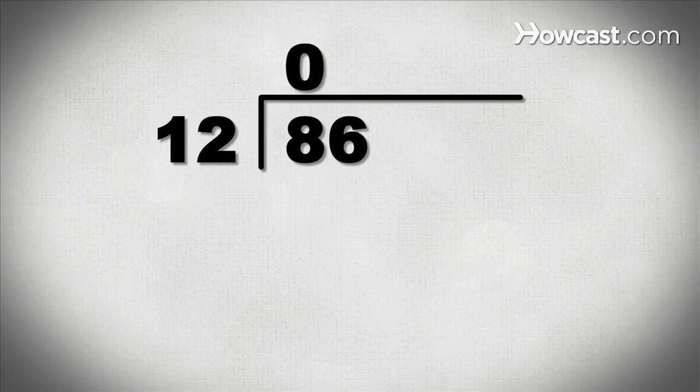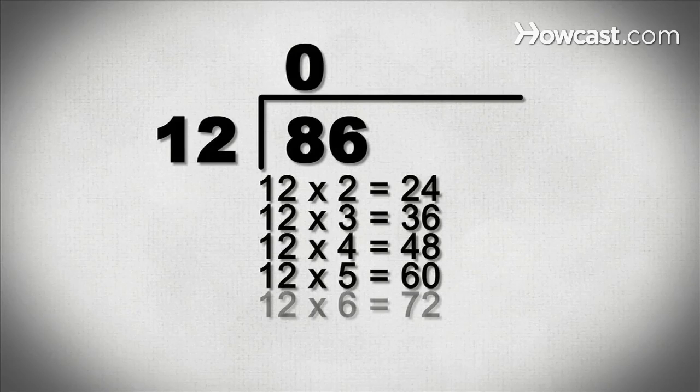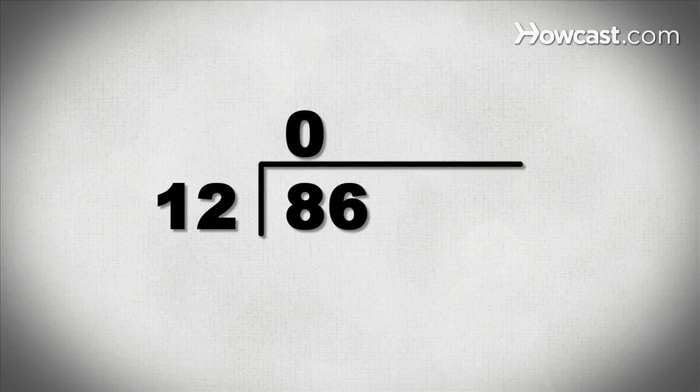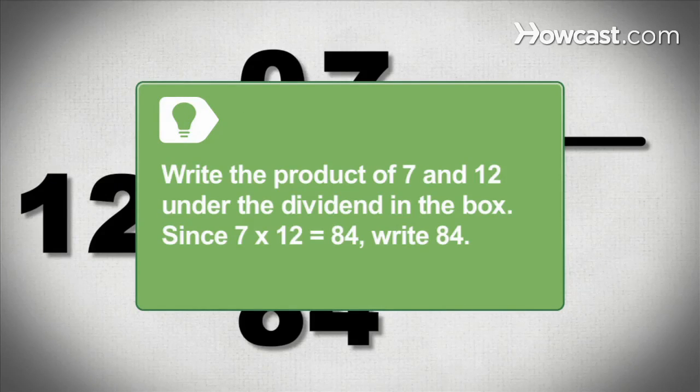Step 4. Determine how many times the divisor will go into that portion of the dividend and place the quotient above it, on top of the division box. For example, 12 will go into 86 seven times, so place a 7 above the 6 in the 86. Write the product of 7 and 12 under the dividend box, since 7 times 12 equals 84. Write 84.